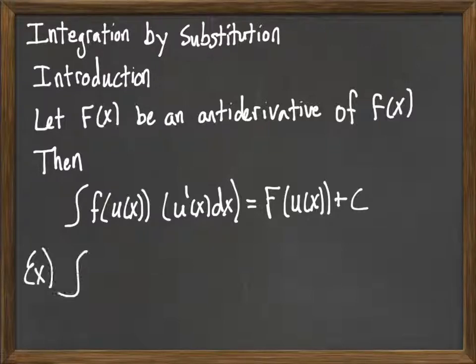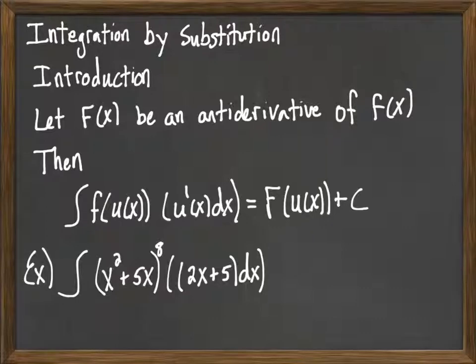As an example, consider this integral here. You'll notice here I have the composite function (x squared plus 5x) to the eighth, and then I have this 2x plus 5 to go with my dx. The 2x plus 5 is the derivative of the stuff inside there, and so because that works, I have the derivative of that.